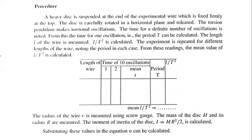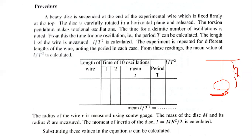In the procedure, we have a string and a disk. We rotate the disk — this is the twist — and observe the oscillation. We measure 10 oscillations to find the time period, and we can measure L by T squared. The moment of inertia of the disk is I equals mR squared divided by 2. We must measure the radius R and the mass m of the disk.